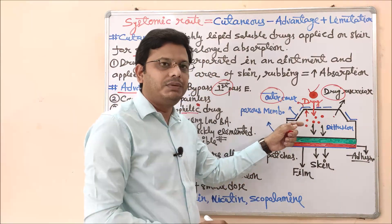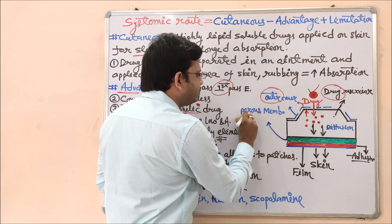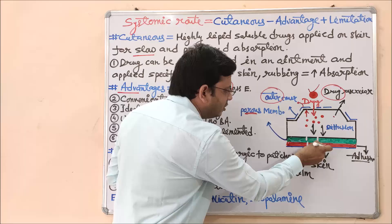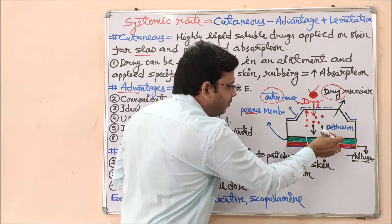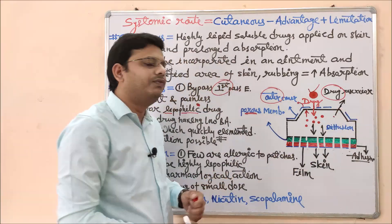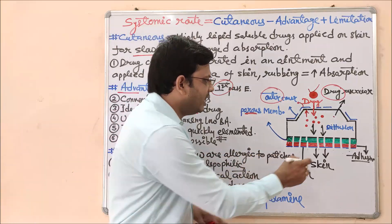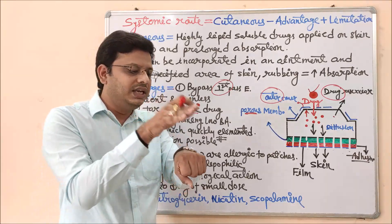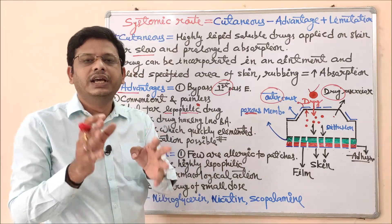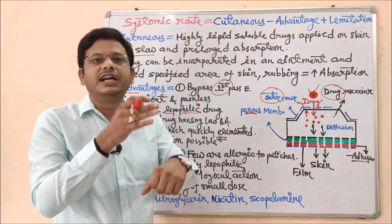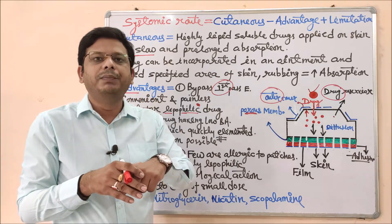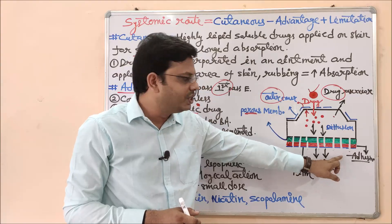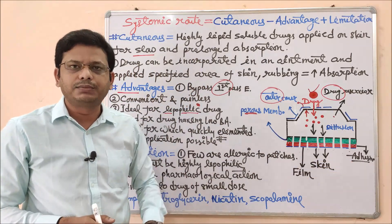Just beneath the drug reservoir is the porous membrane, shown in green. This membrane has pores that allow the drug to diffuse through — this is the diffusion process enabled by the porous membrane. Next is the adhesive, shown in red — this is the substance that allows the patch to stick over the skin. Without the adhesive, the patch would not remain on the skin during activity.